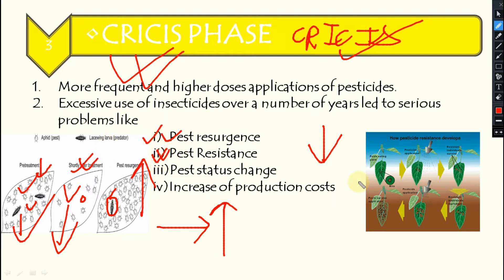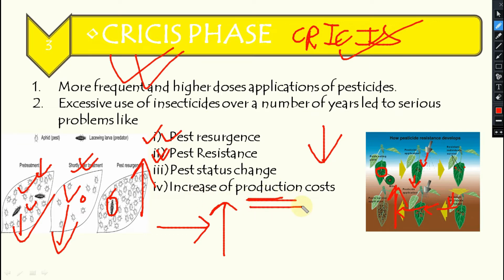Pest resistance also developed — some pests survived pesticide application and their population continued to increase, leading to resistance. Additionally, minor pests became major pests. As a result, input costs increased while output yield did not keep pace, creating a negative economic impact during the crisis phase.